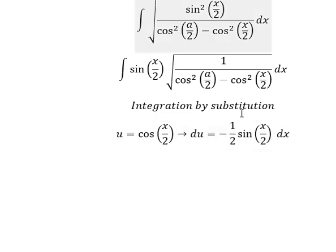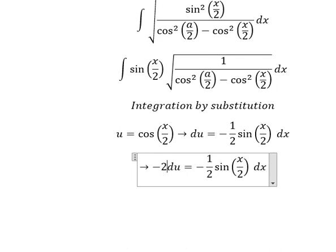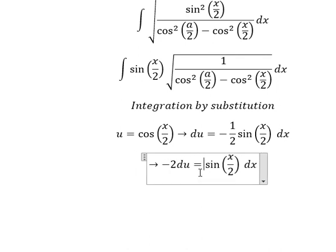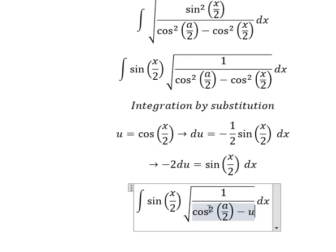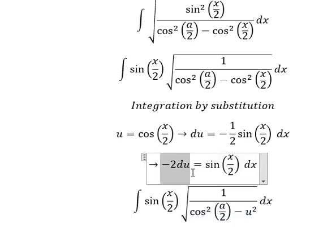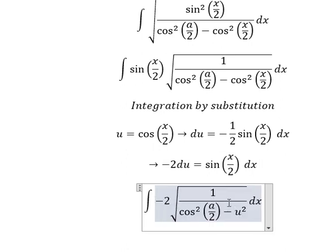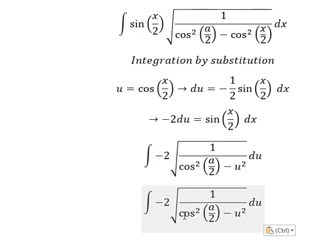Because we don't have negative 1 over 2, so we put this one to the left. So this one we change by u, and we have u squared. Sine(x/2) dx, we change by the corresponding expression. So we can put it like this.